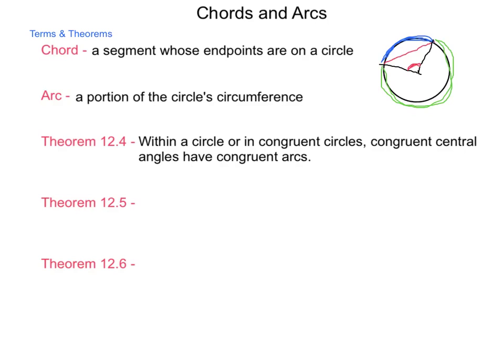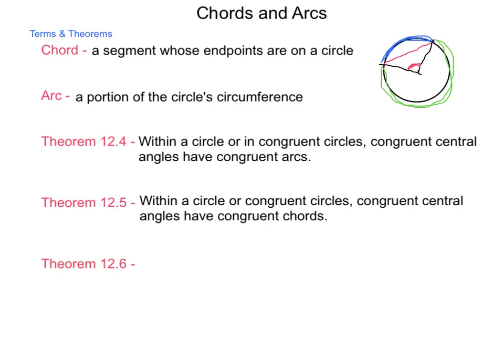Theorem 12.5. Within a circle or congruent circles, congruent central angles have congruent chords. So similar to the idea of having those congruent arcs being formed, the chords will be of the same length also, if our circles are congruent. The converse to this, within a circle or congruent circles, congruent chords have congruent central angles.